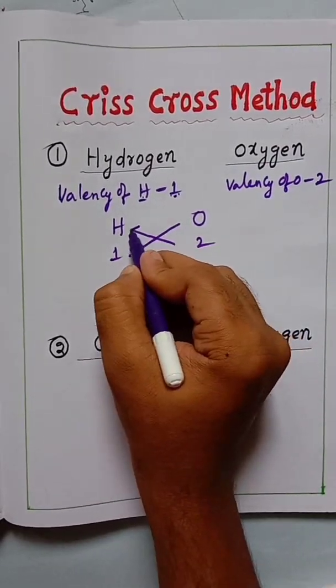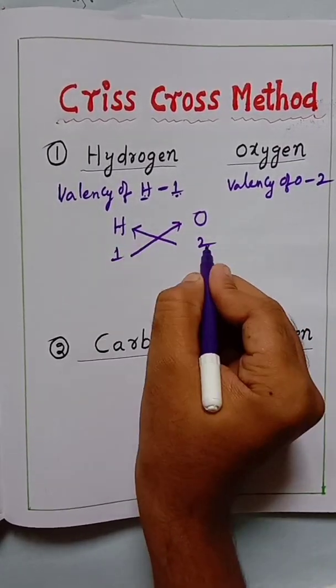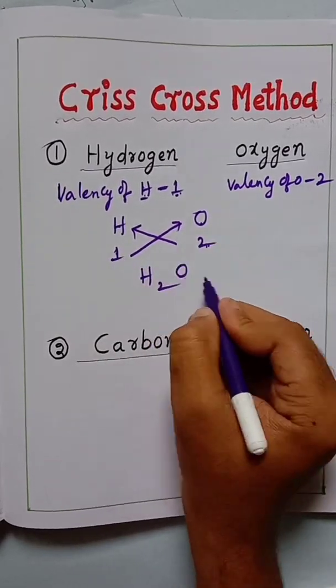Then you have to cross, write the cross symbol like this. When you cross, you write here H2, and O1.